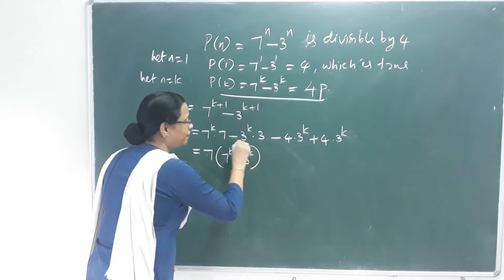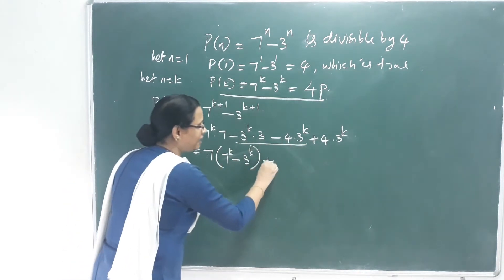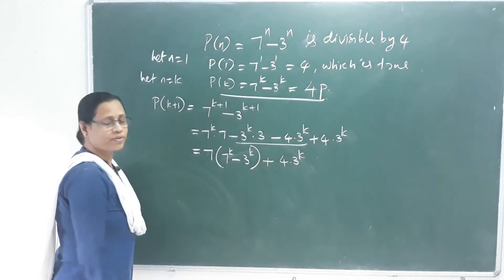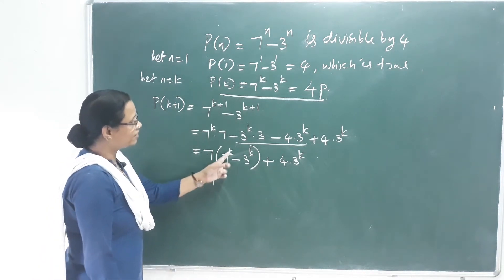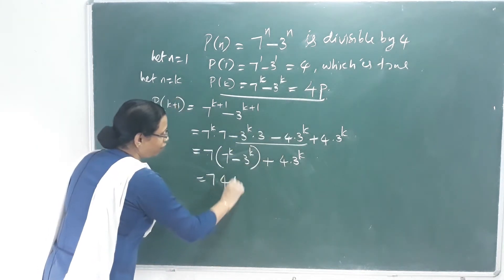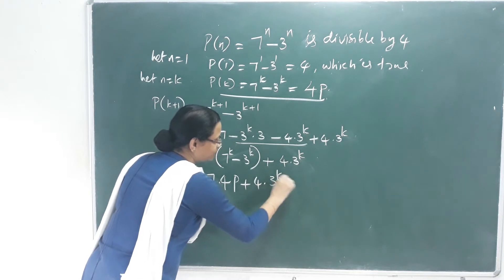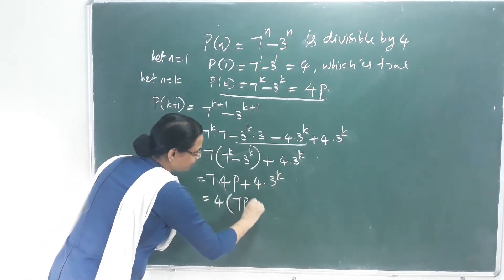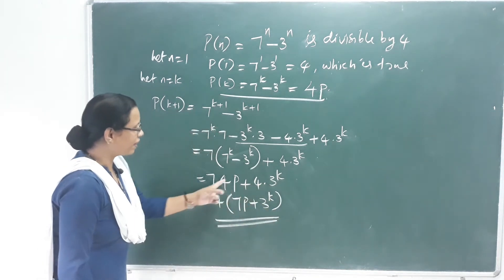We have 7 outside. The balance is 4 into 3 raised to k. This equals 7 into 7 raised to k minus 3 raised to k, which is 4p. Plus 4 into 3 raised to k. This equals 4 into 7p plus 3 raised to k. Now we have 4 outside.